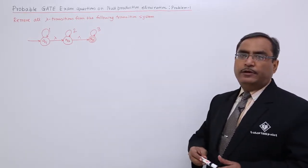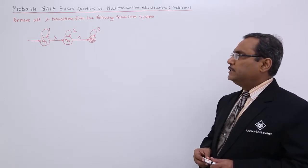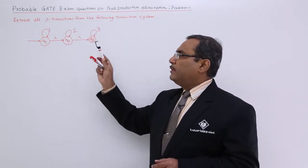The transition system is given to us. We are having Q1, Q2, Q3. We are having transitions with input 1, input 2 and input 3, and we are having two lambda transitions.